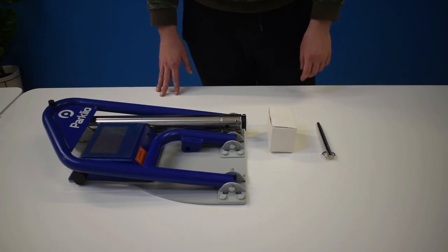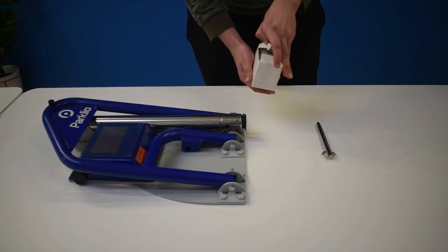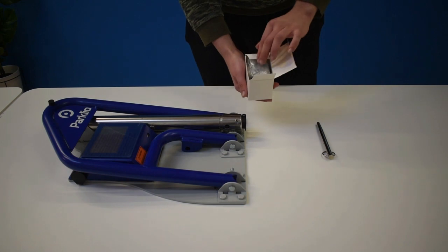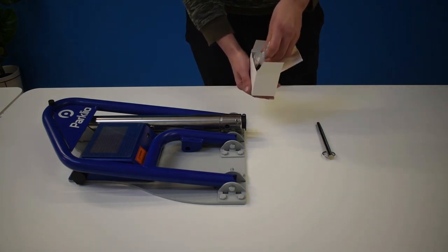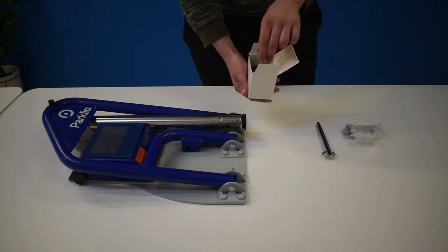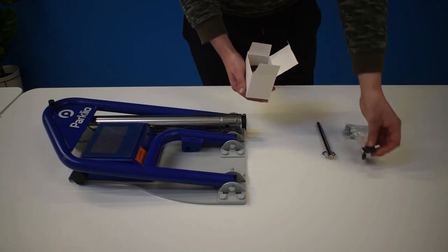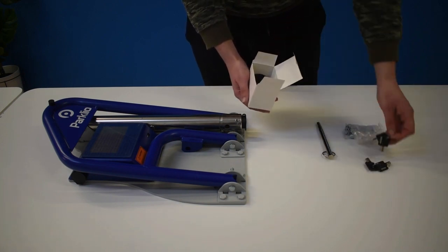The smaller box contains the following items: a bag of four bolts, two sets of physical keys, and a charger for the battery.